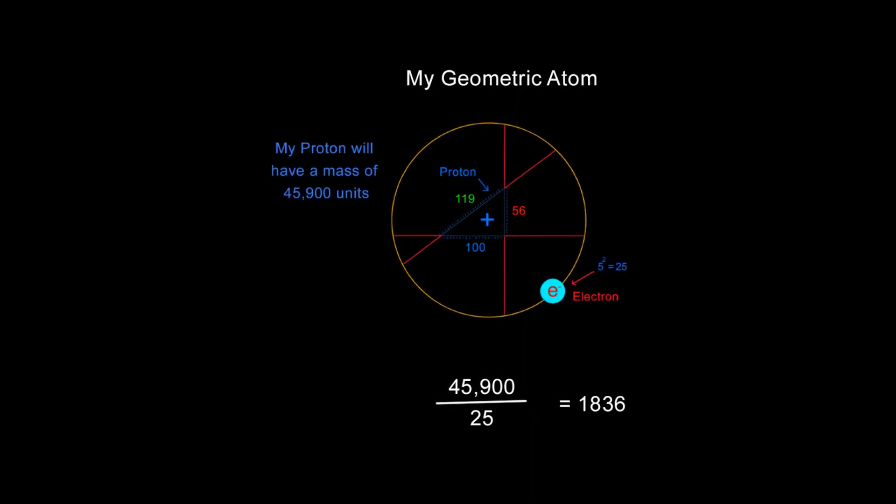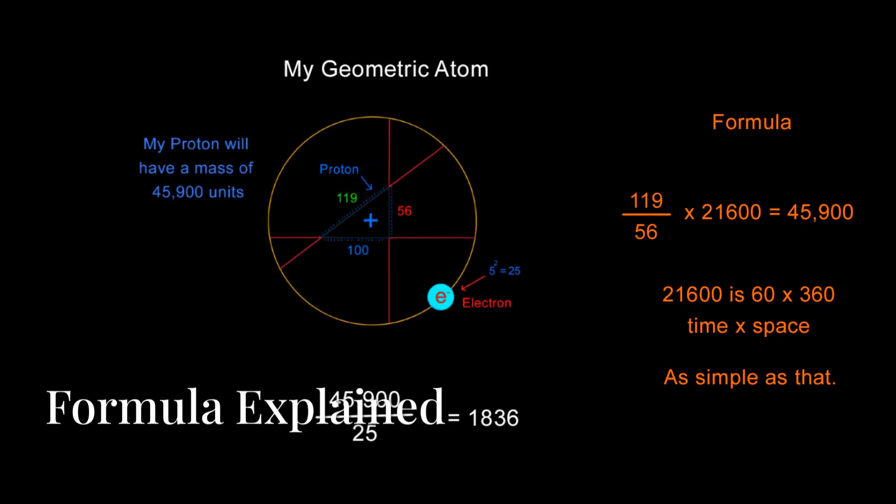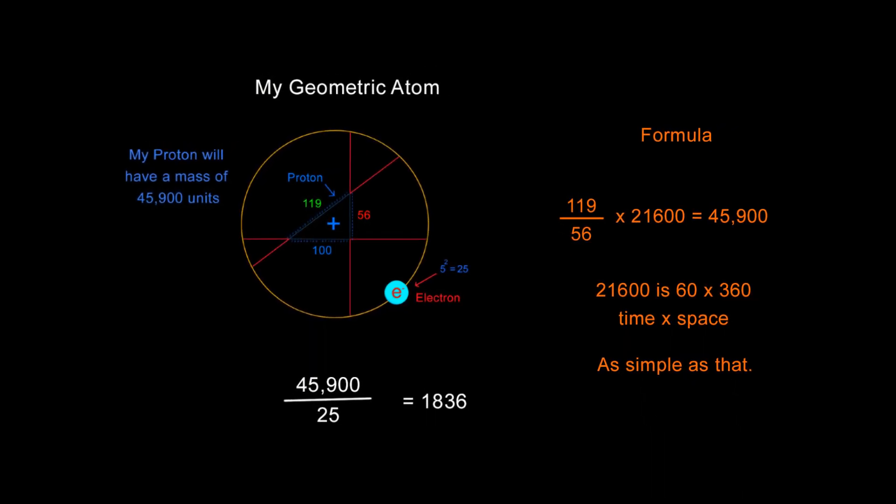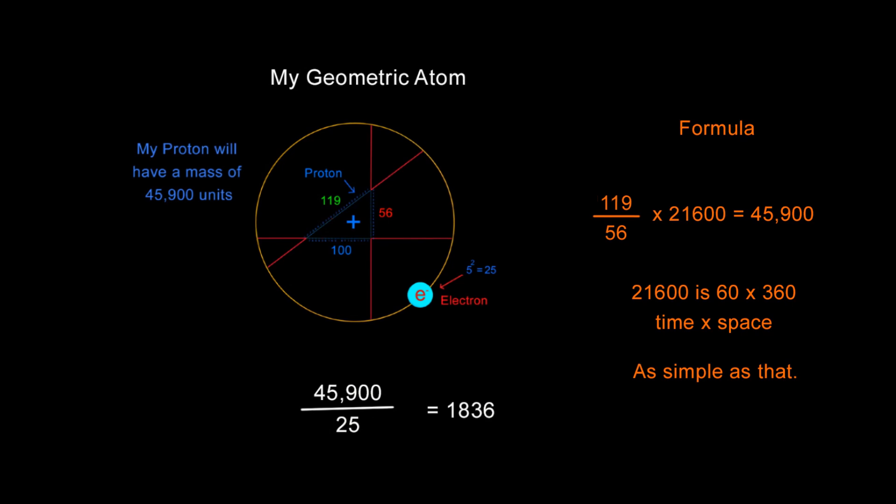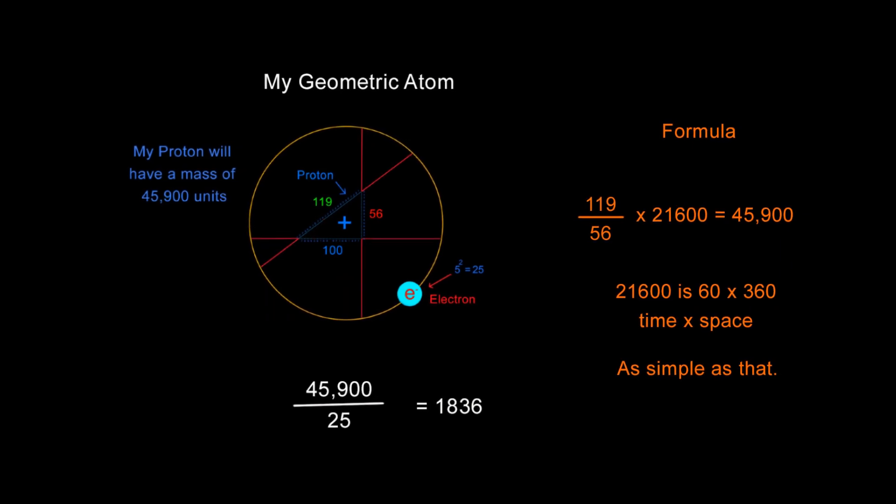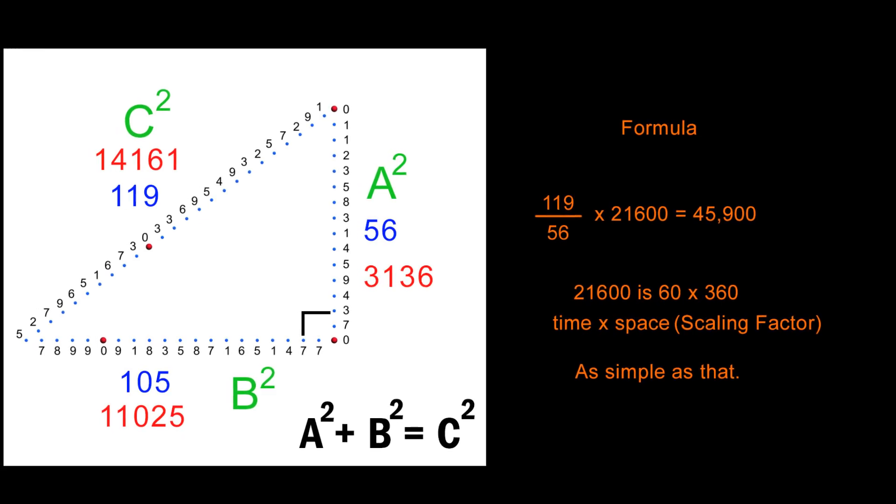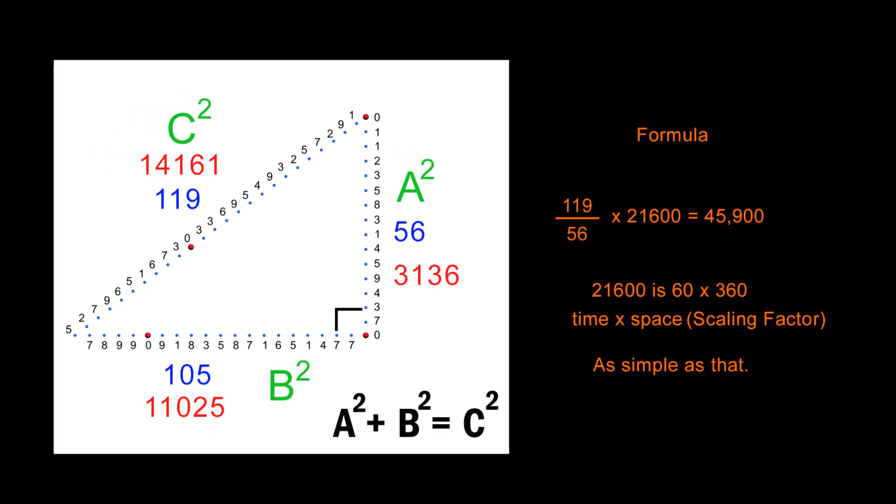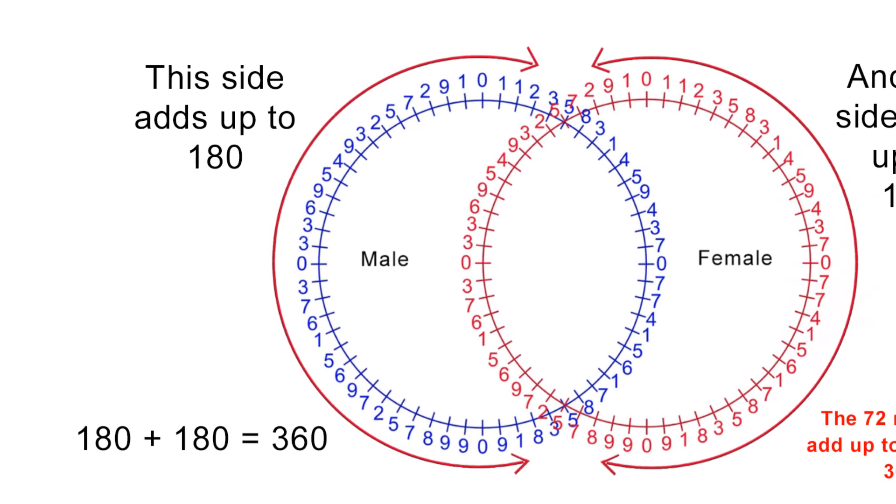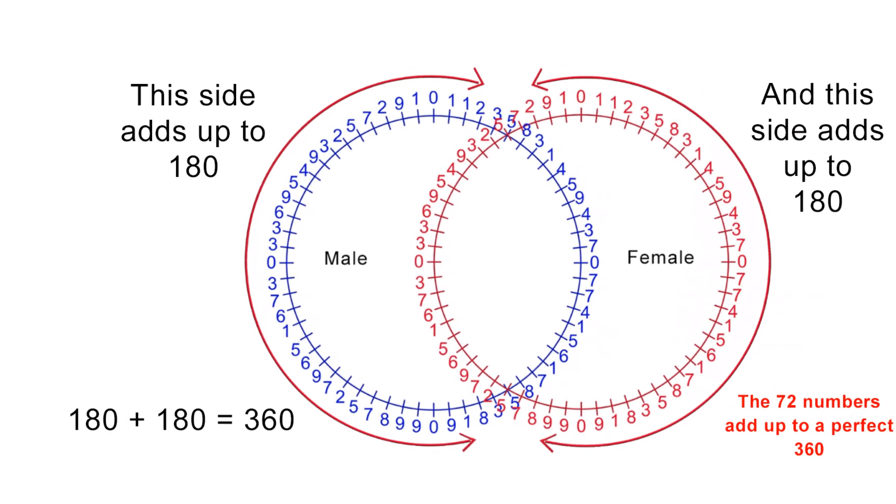Here is the formula it used to derive 45,900 units for the proton. 119 divided by 56 multiplied by 21,600 equals 45,900. 119 is the value of the hypotenuse. 56 is the height of the Fibonacci triangle. And 21,600 is 60 times 360, which is time multiplied by space, the cosmic scaling factor. All of these units are generated directly from the Fibonacci 60-digit clock shown in video one of this series.